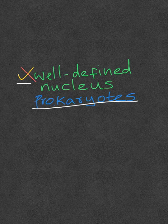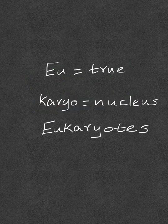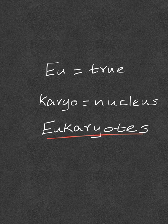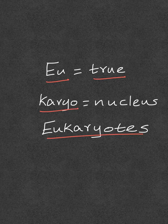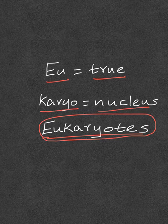Those that do not have a well-defined nucleus are called prokaryotes. The term eukaryotes can be split into two main word parts: 'eu' means true and 'karyo' means nucleus. The term itself means that eukaryotes are those organisms that have a true nucleus.